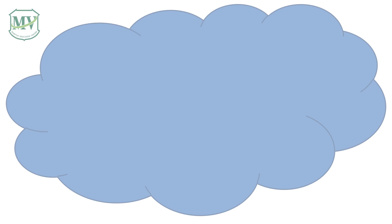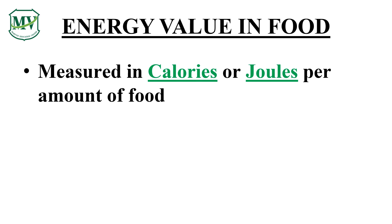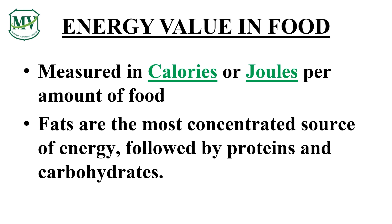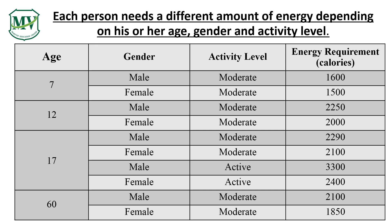We will now move on to energy requirement and food. Food gives us energy, but how can we measure the energy value in food? Energy value in food is measured in calories or joules per amount of food. Fats are the most concentrated source of energy, followed by proteins and carbohydrates. Please read the different foods that contain different energy values table, starting from food to quantity and energy value in calories. For example, egg, one medium size, 78 calories. Each person needs a different amount of energy depending on his or her age, gender, and activity level.